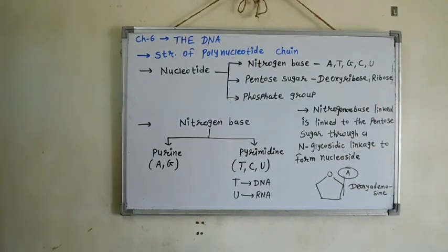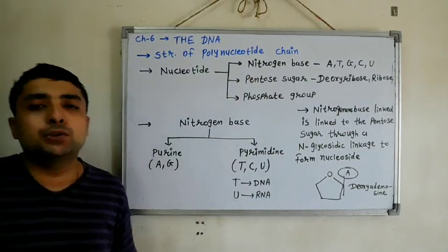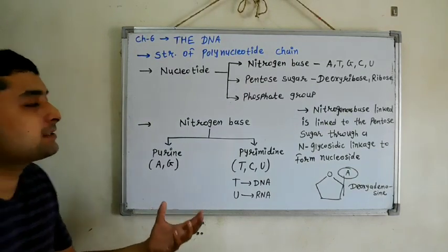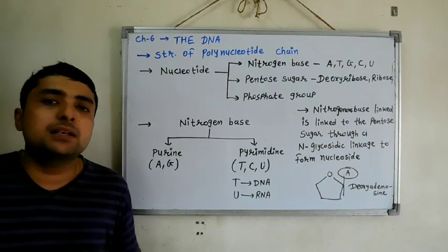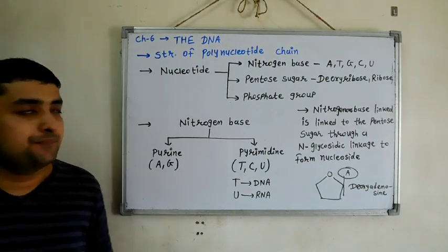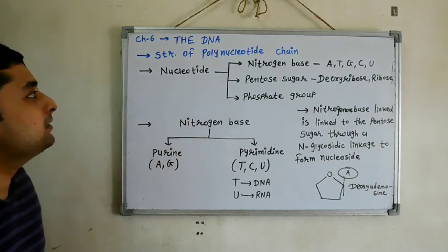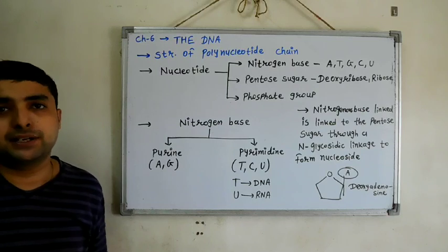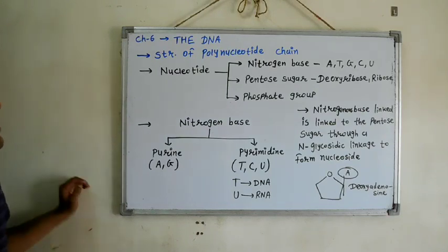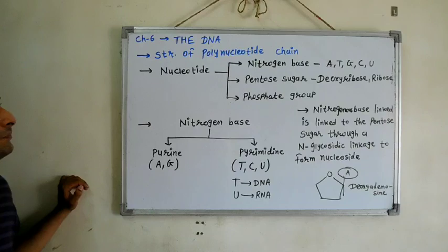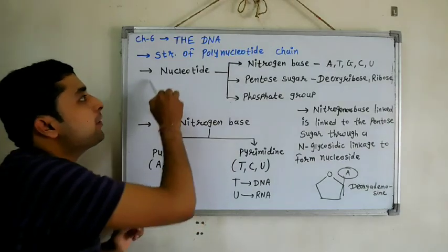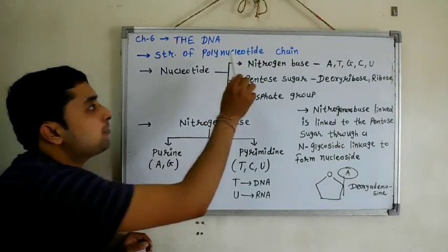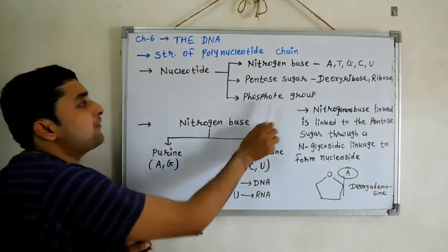Now, structure of polynucleotide chain. So first we discuss different basic components of DNA. The first one is nucleotide and nucleoside are the basic components of DNA. Now nucleotide carries three different structures: nitrogen base, pentose sugar, and phosphate group.